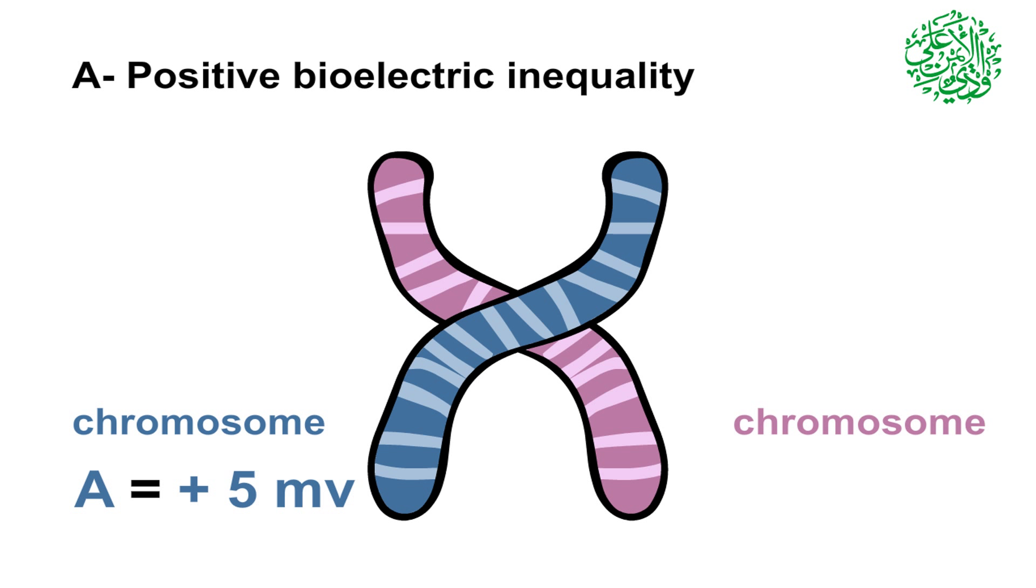In this form of inequity, if chromosome A1 has plus five millivolt electric charge, chromosome B1 will have less than minus five millivolts.